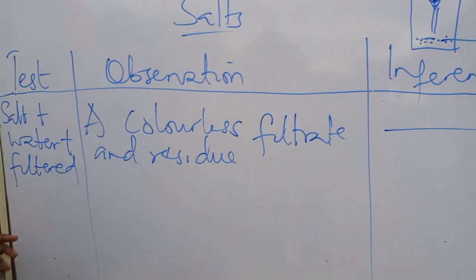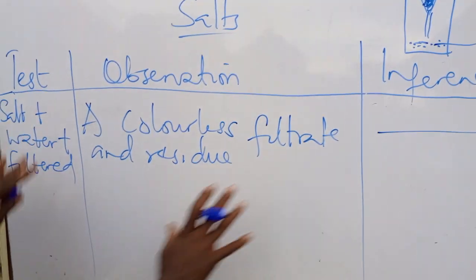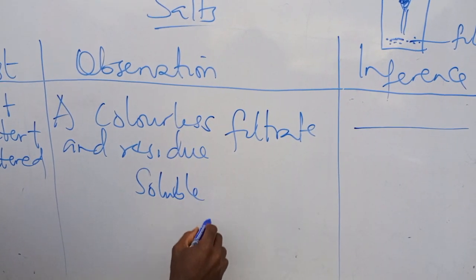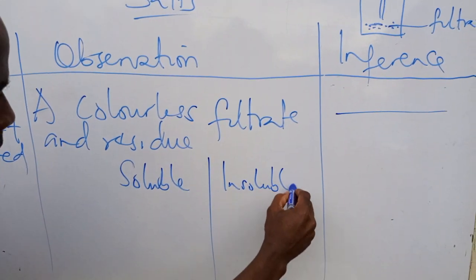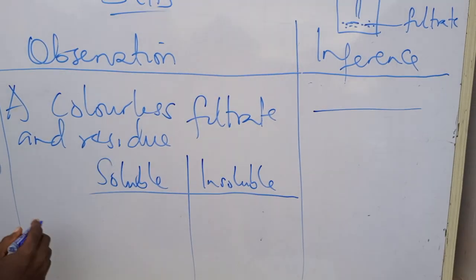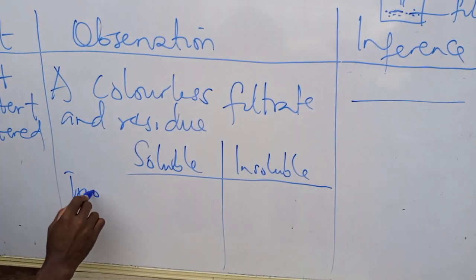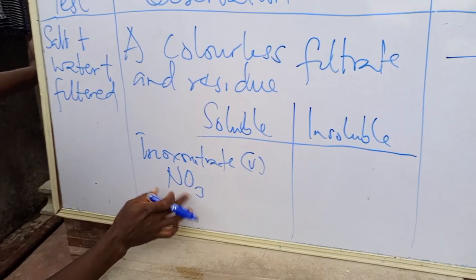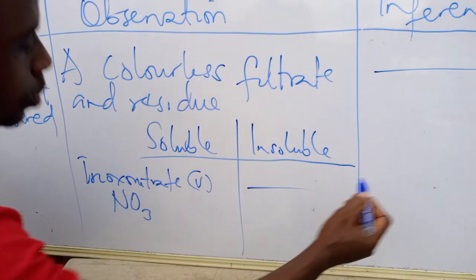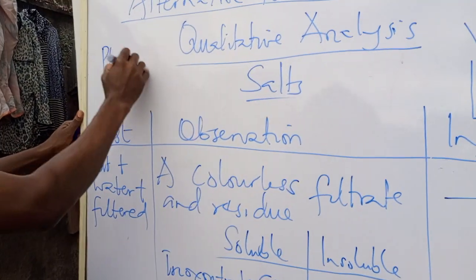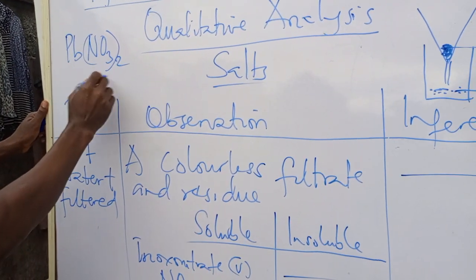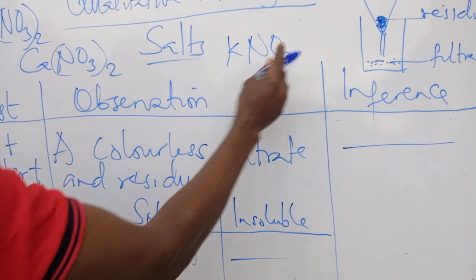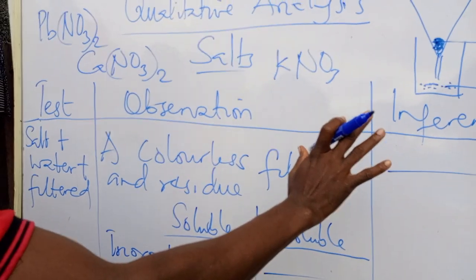I'm going to give you some soluble and insoluble salts. The soluble salts include: all salts that contain nitrate (NO3). Any NO3 salt is always soluble — none of them is insoluble. So calcium nitrate, potassium nitrate, and zinc nitrate are all soluble salts.